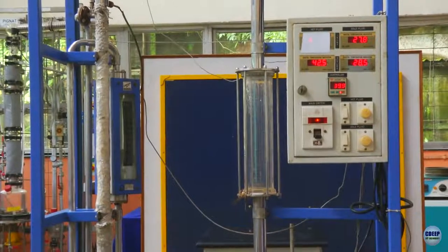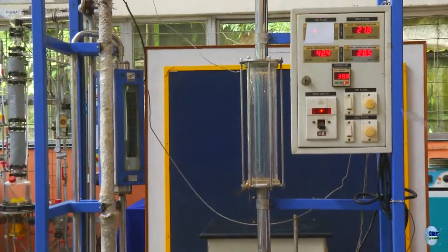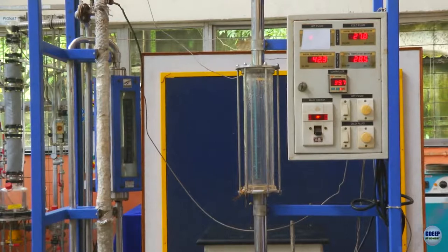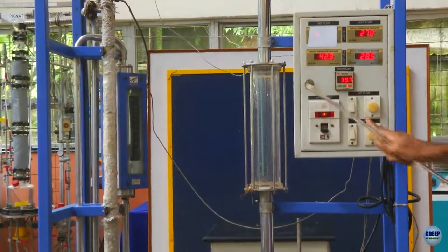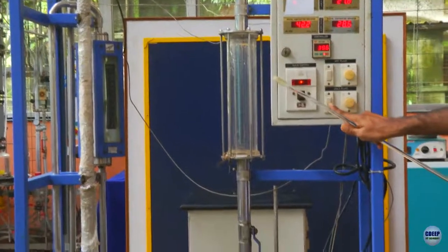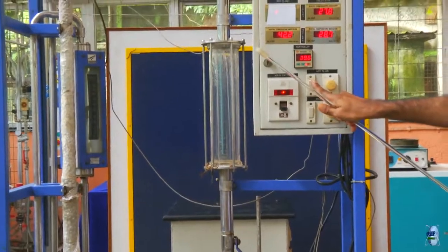The experiments to be performed are very simple. First we set a desired hot fluid inlet temperature. Start the hot fluid and cold fluid circulation pumps and wait for the system to attain steady state.